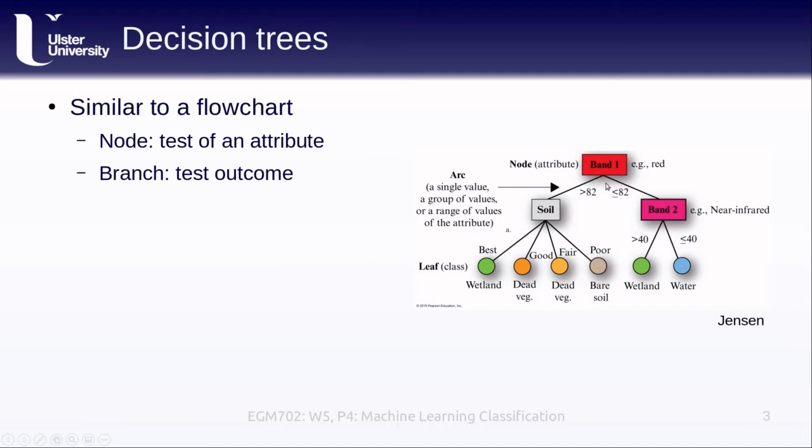The branches of the decision tree are the particular test outcomes that we have. So for the band one example here, one branch is where the pixel value is greater than 82, and one is where it is less than or equal to 82.